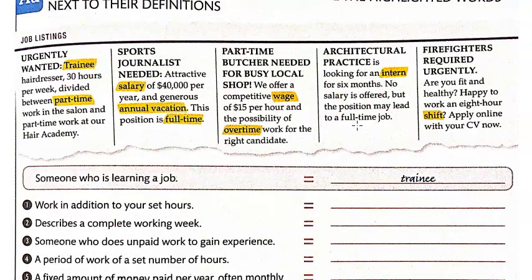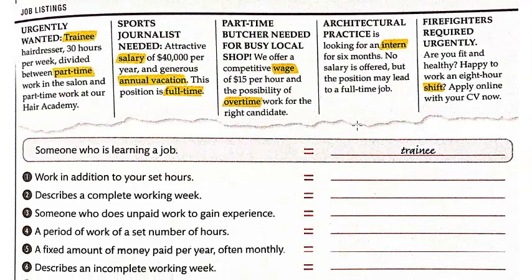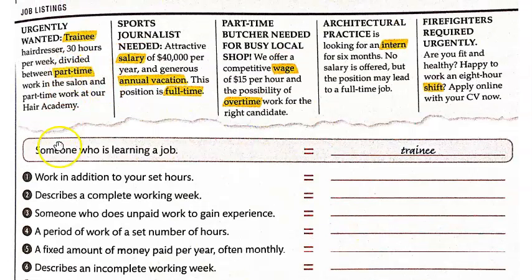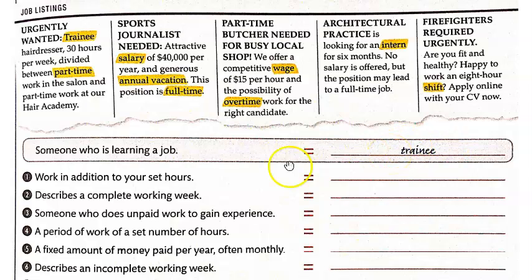We're going to use those job listings in numbers 1 through 8. For example, someone who is learning a job — someone who is learning a job equals a trainee. So trainee hairdresser: that person isn't a full-time hairdresser, they're learning how to be a hairdresser. It's kind of like an apprenticeship. Go ahead and pause the video and do numbers 1, 2, 3, 4, and 5.